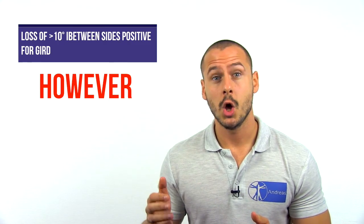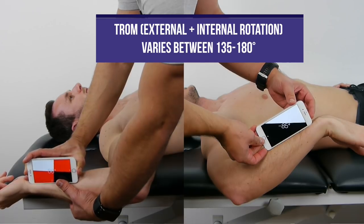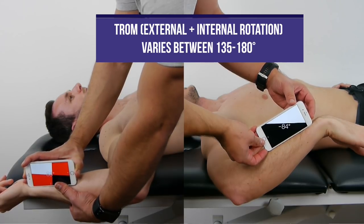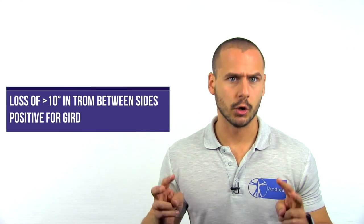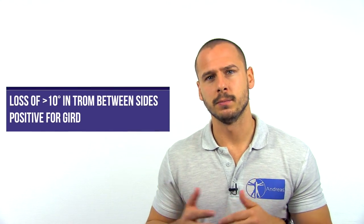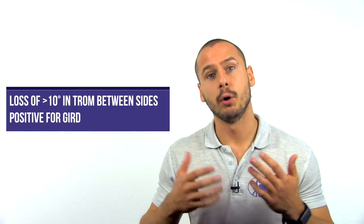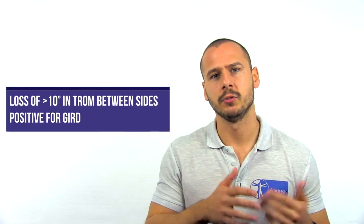What's more interesting is to see the total range of motion from external to internal rotation. This T-ROM commonly varies between 135 to 180 degrees with no more than a 10 degree difference between sides. While you may have seen a side-to-side difference of more than 10 degrees of internal rotation, the T-ROM for both shoulders might be the same, with the side having less internal rotation displaying an increase in external rotation. To diagnose GIRD, assess the total range of motion of internal and external rotation in both shoulders and see if there is a more than 10 degree difference.